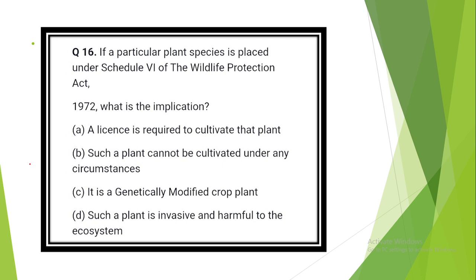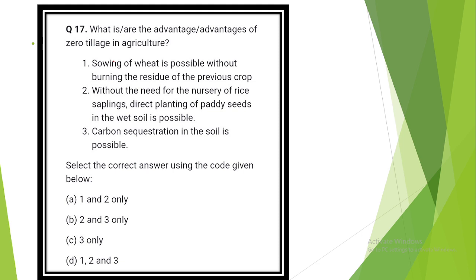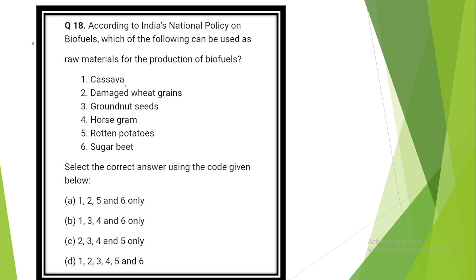Question number 16. If a particular plant species is placed under schedule 6 of the Wildlife Protection Act 1972, what is the implication? The answer is option A: A license is required to cultivate that plant. Question number 17. What are the advantages of zero tillage in agriculture? Answer is option D. Sowing of wheat is possible without burning the residue of the previous crop. Without the need for nursery of rice sampling, direct planting of paddy seeds in the wet soil is possible. Carbon sequestration in soil is possible.